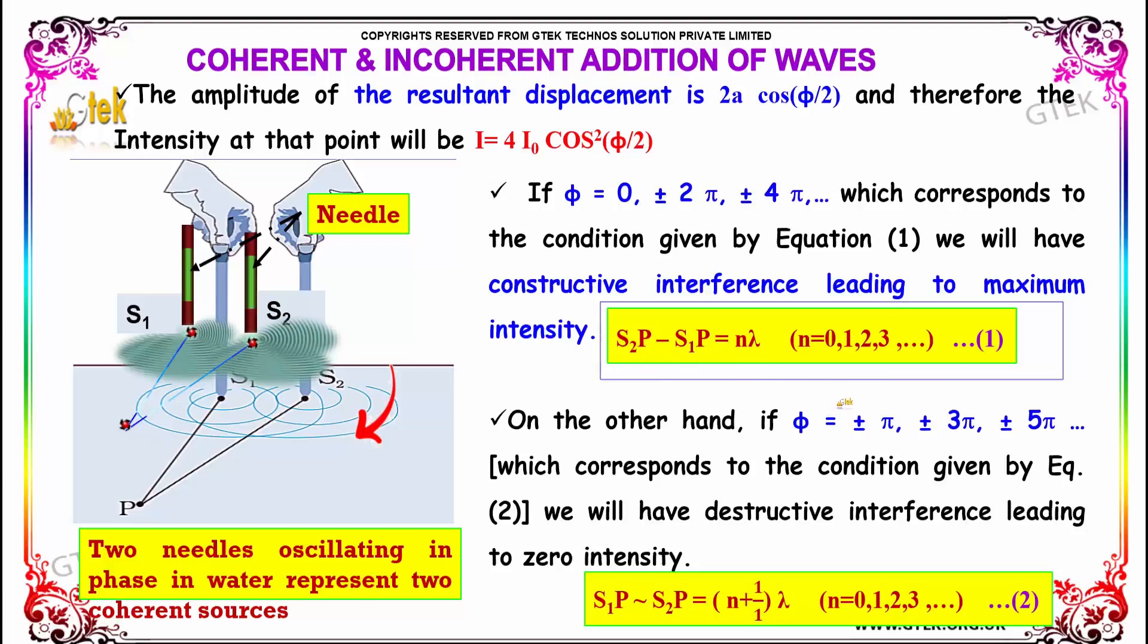On the other hand, if φ = ±π, ±3π, ±5π, and so on, this corresponds to the condition given by equation 2. We will have destructive interference leading to zero intensity.